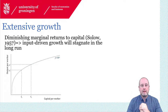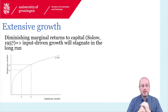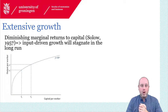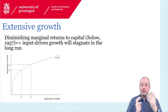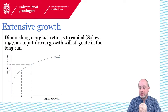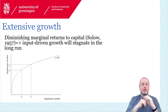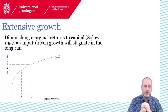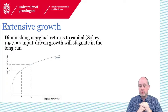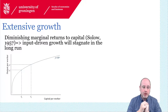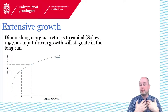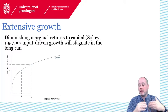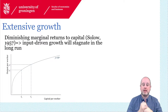What is shown in this example is so-called extensive growth. There are two points denoted — one at K0 and one at K1. In this economy there has been an increase in the amount of capital, and as a result there is a movement along the production function — an upward movement in output per worker from Y0 to Y1. The diminishing marginal returns are shown as the curvature of this production function, so a doubling of capital per worker leads to ever smaller increases in output.